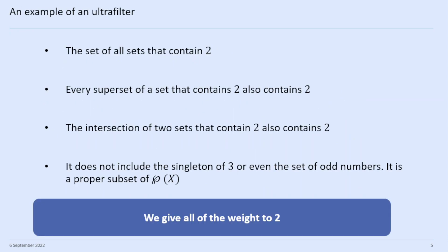Here is an example of an ultrafilter: the set of all sets that contain two. Every superset of a set that contains two also contains two, and the intersection of two sets that contain two also contains two. But it's not the whole power set, because it does not include the singleton of three, or the set of odd numbers, or the singleton of 25, or anything like that. So in this case, we're giving all of the weight simply to the number two.